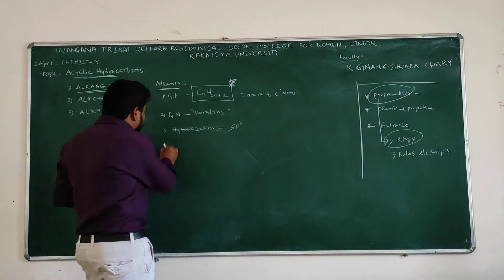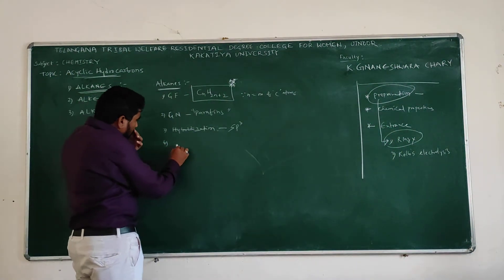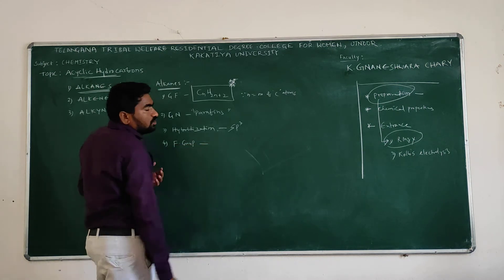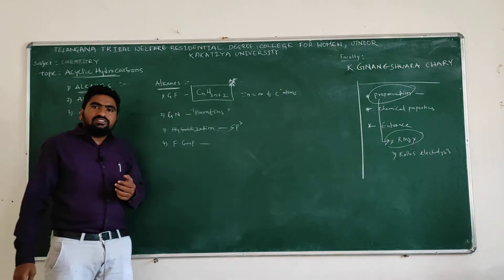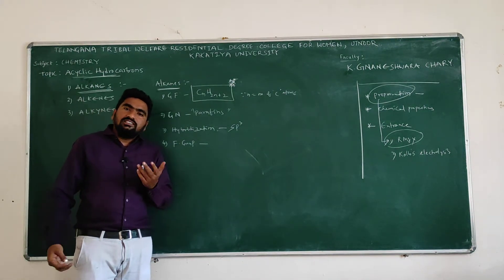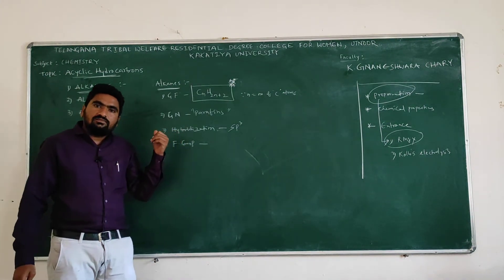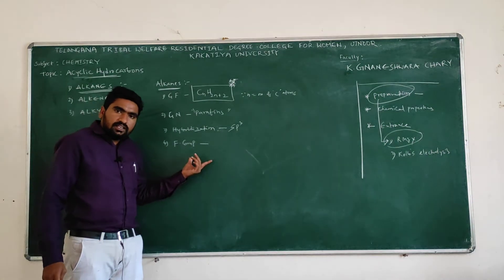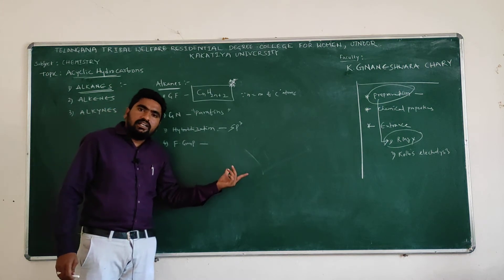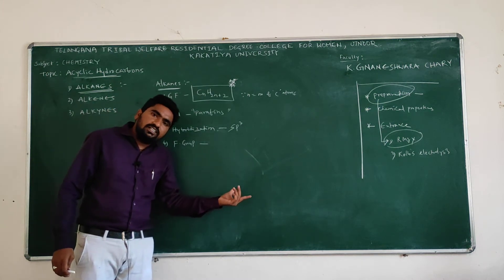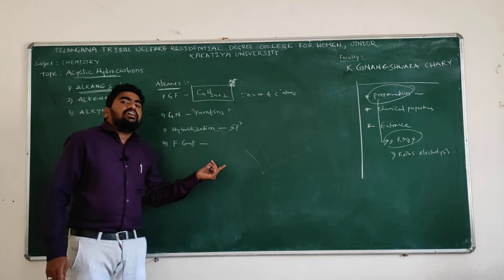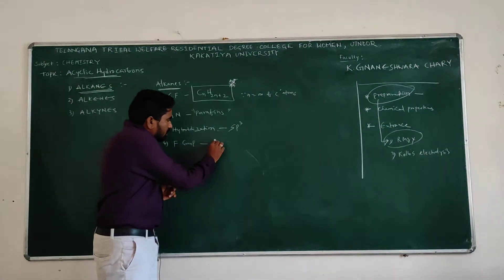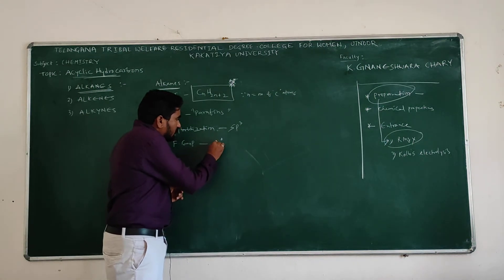What is the functional group of alkanes? Think — is there any functional group in alkanes? In methane, ethane, propane, butane, pentane, hexane, heptane — whatever it is — here in alkanes the functional group is nothing but hydrogen. So the functional group of alkanes is hydrogen.